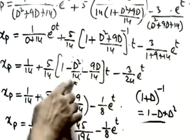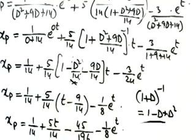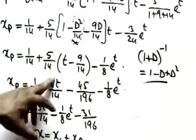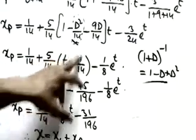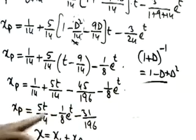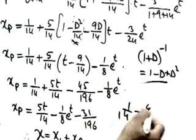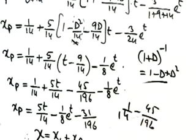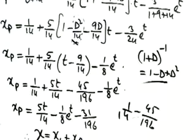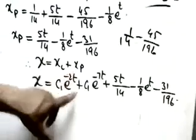For the −3e^t term, use the e^(at) method with a = 1: substitute D = 1 into D² + 9D + 14 → 1 + 9 + 14 = 24, giving −3e^t/24 = −1/8 e^t. Combining all particular integral terms and simplifying using LCM, we obtain xp = −31/196 + 5t/14 − (1/8)e^t. The complete solution is x = xc + xp.